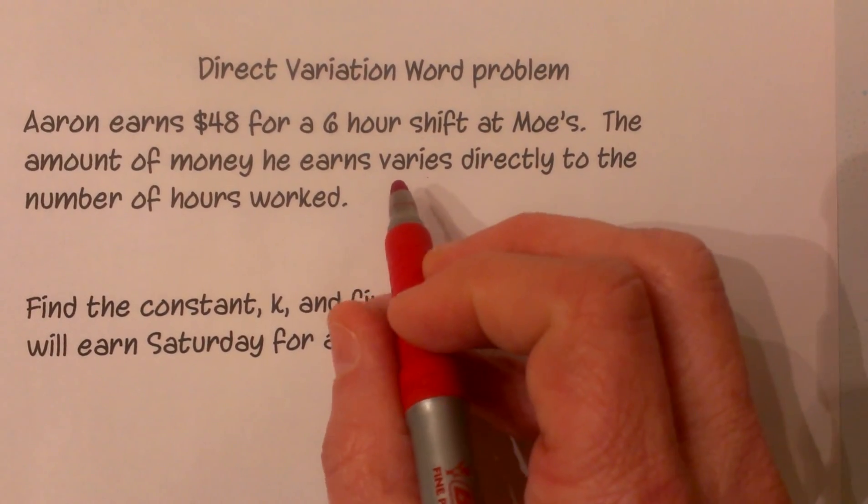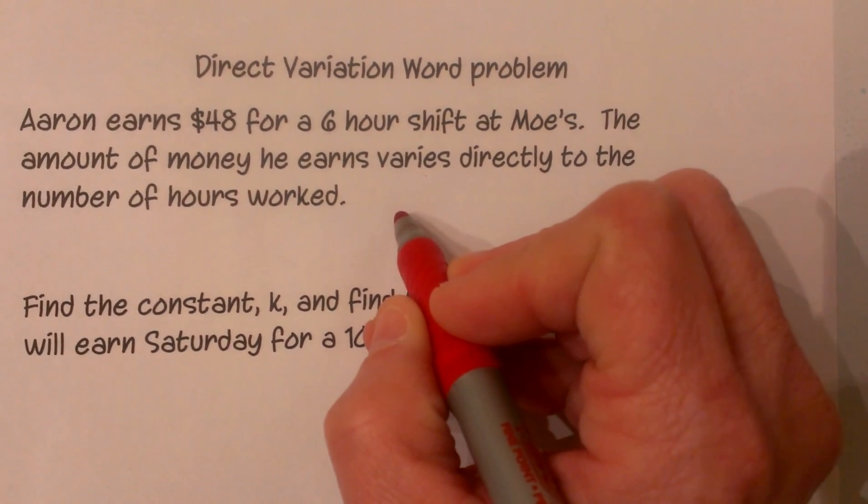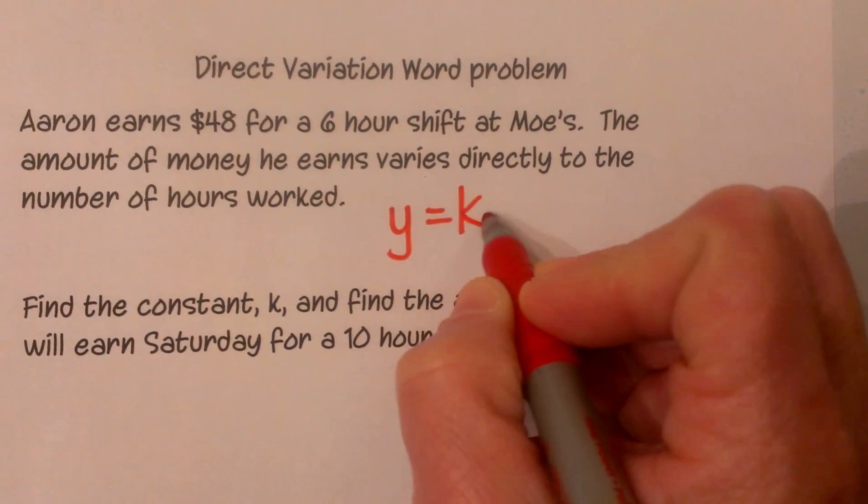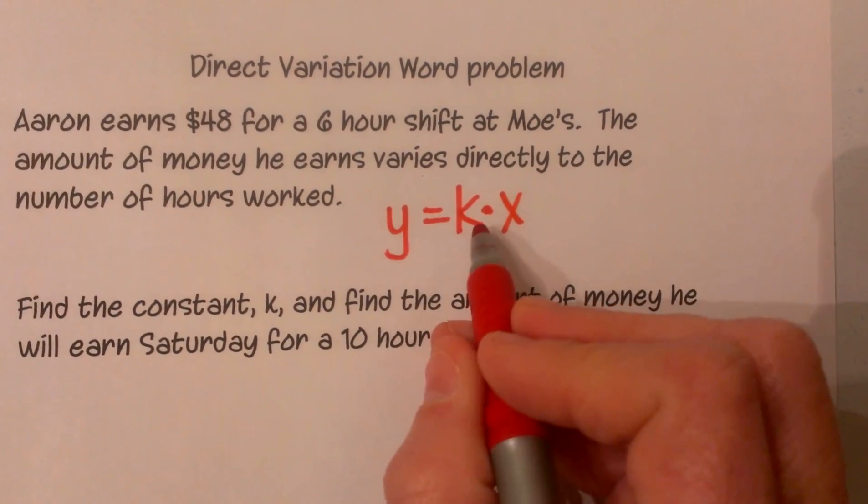Now we need to know the direct equation for variation and that is y equals k times x. And that is your skeleton formula.